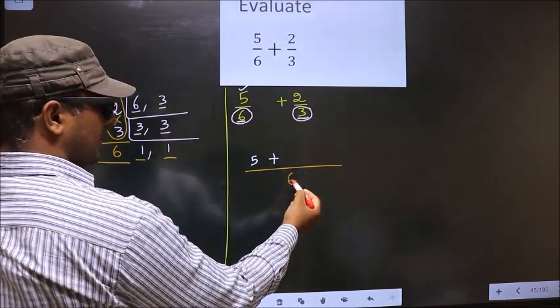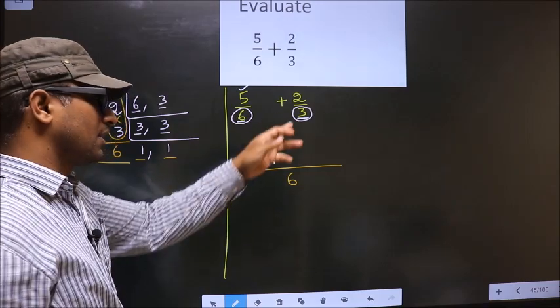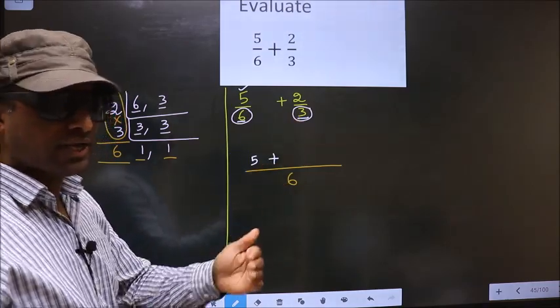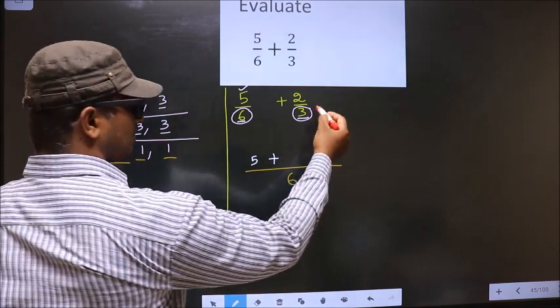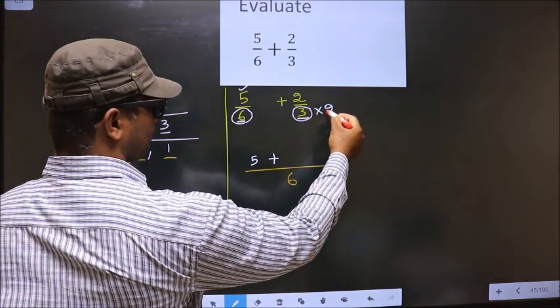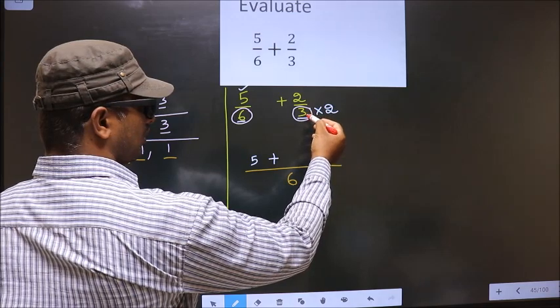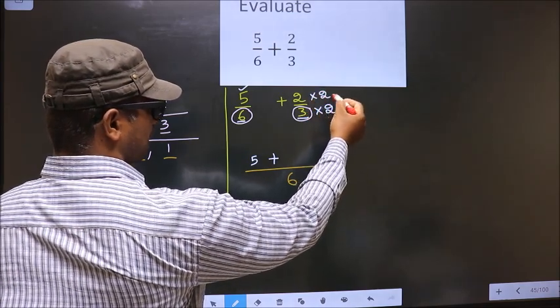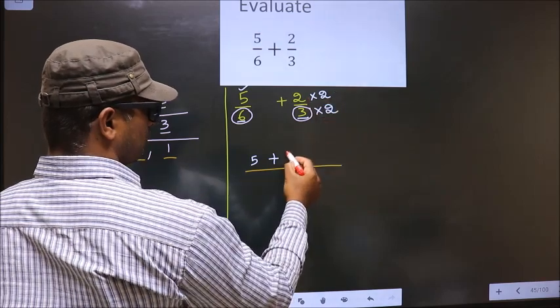Now here it is 3 and here it is 6. 3 should change to 6. For that to happen we should multiply this by 2. Whatever number you are multiplying to the denominator numerator also you should multiply by the same number. So 2 into 2 is 4.